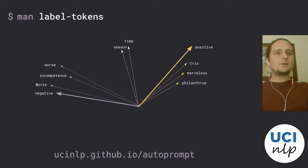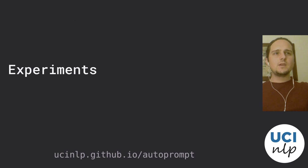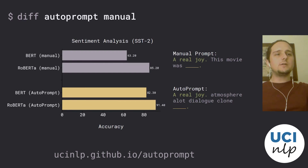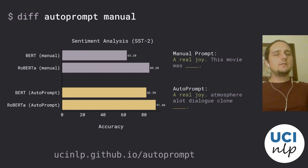Let's now go over a couple of experimental results. The first thing we want to see is whether our method outperforms or is competitive with manual prompts. The first task we look at is sentiment analysis on the Stanford Sentiment Treebank. The manual prompt is shown above and the automatically generated prompt is shown below. As we can see, for both BERT and RoBERTa, our prompt tends to elicit better performance on this task than the manual prompt, achieving roughly 5-10% better performance.